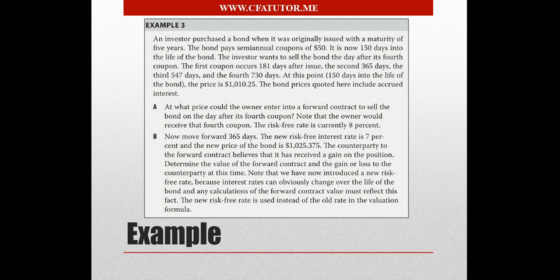At this point in time, which is 150 days into the life of the bond, the price, the current price, is 1010.25. The bond prices quoted here include accrued interest. At what price should the owner enter into a forward contract to sell the bond on the day after its fourth coupon? Note that he would receive the fourth coupon, so it is relevant to the analysis, and we are assuming a risk free rate of 8%.